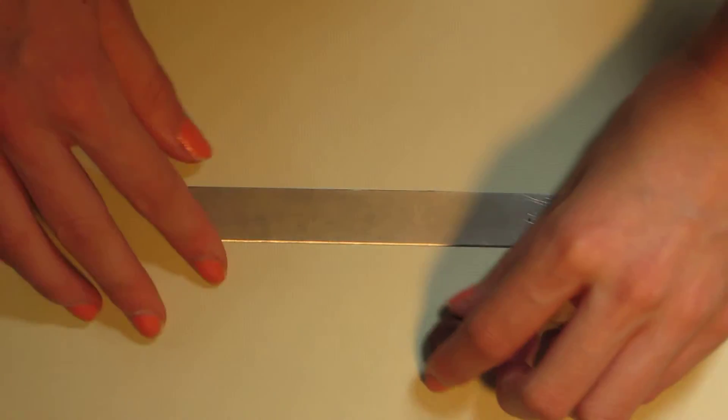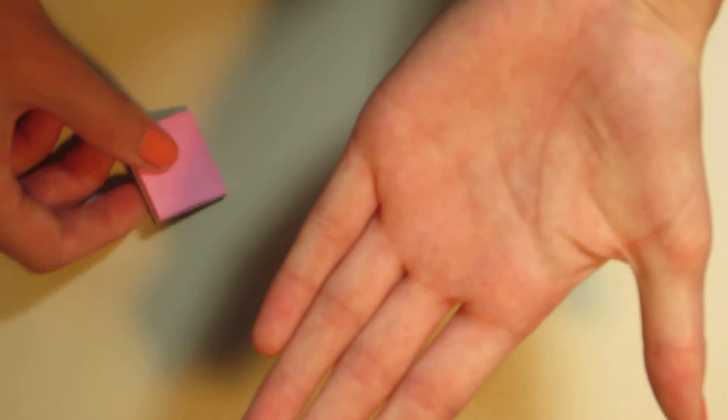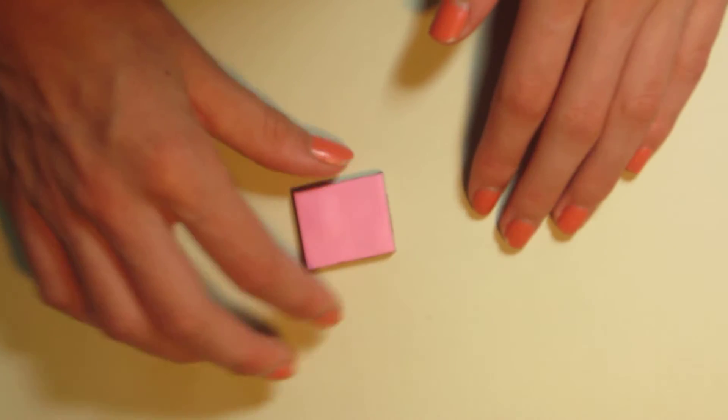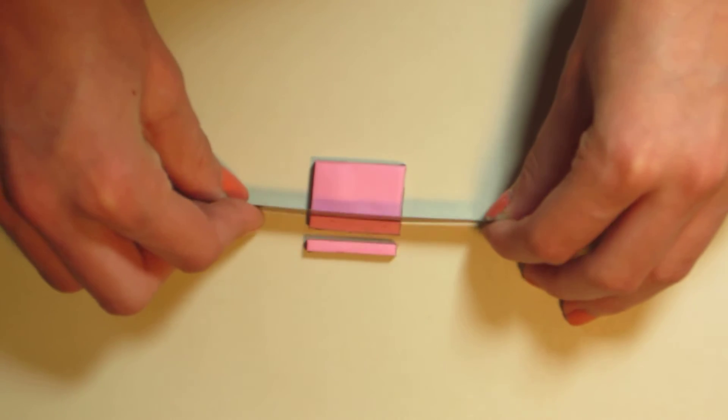But what you first want to do is you want to roll out your pieces of clay into pretty thin strips. And then you want to layer them brown, then white, then pink on top. And then you just want to cut them out in thin strips.